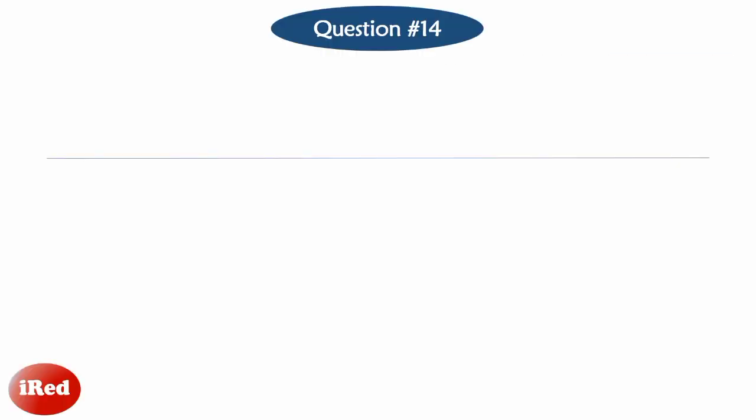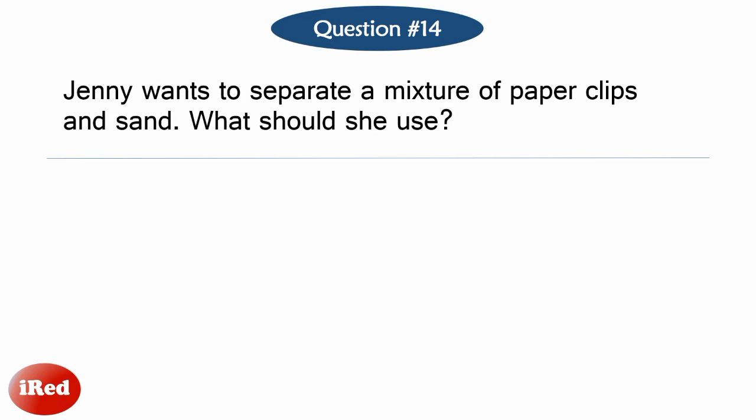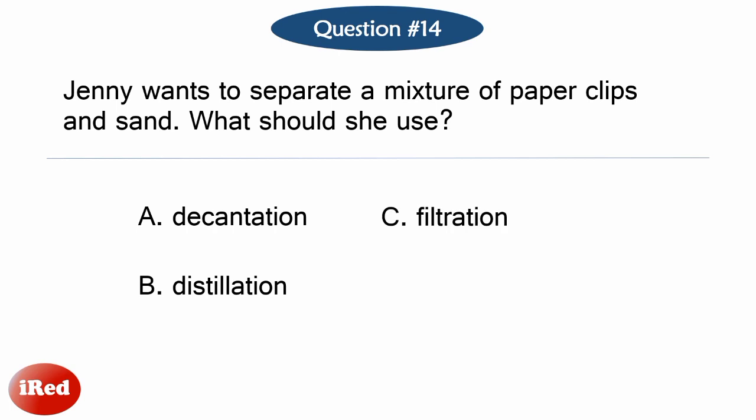Number fourteen: Johnny wants to separate a mixture of paperclips and sand. What should he use? Letter A: Decantation. Letter B: Distillation. Letter C: Filtration. Or letter D: Magnetic separation.